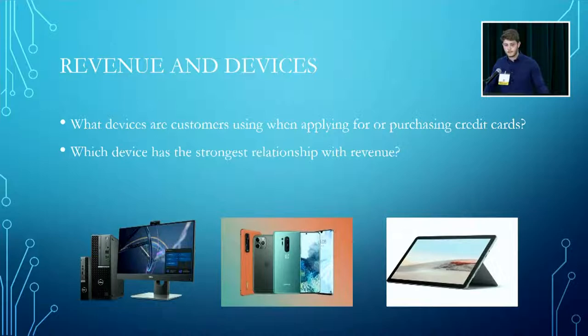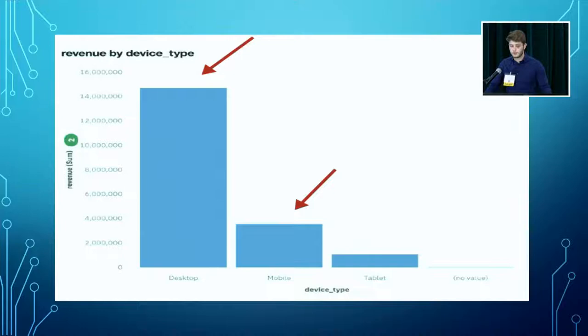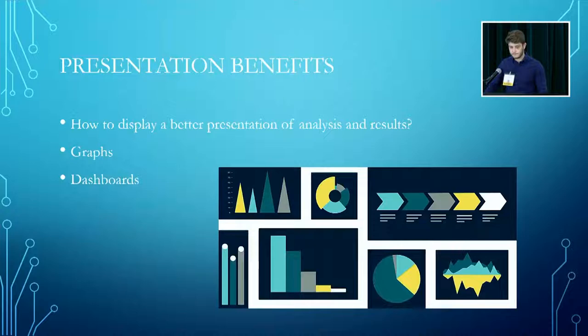Now we can see what device customers were using when applying and purchasing credit cards, and which device had the stronger relationship with revenue. People making credit card purchases are mostly using desktop, then mobile, then tablet. Usually when you're using your desktop you're at home, so you feel more comfortable making a purchase, and people tend to feel more secure purchasing through their desktop rather than mobile or tablet.